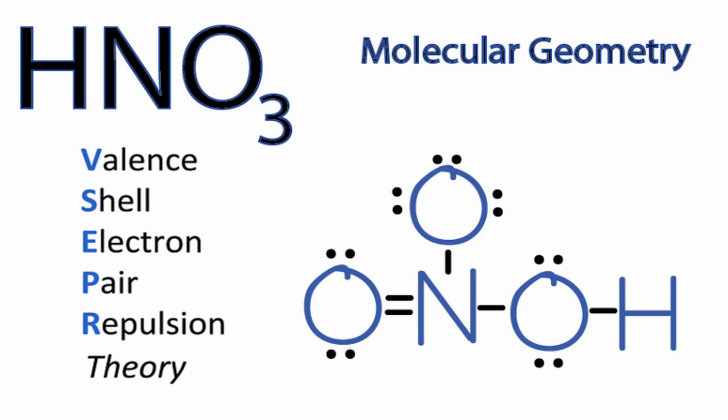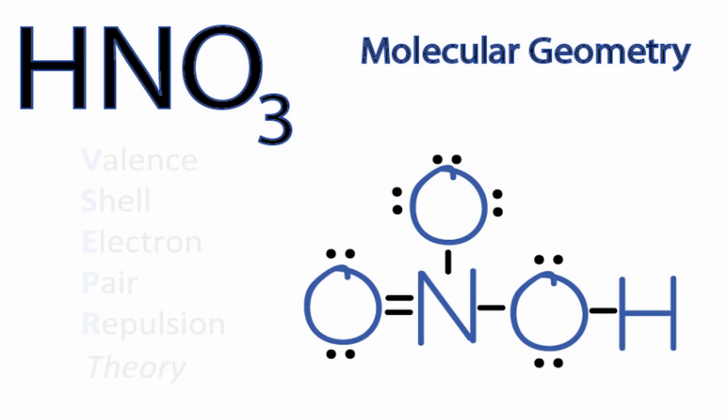And we can see that there are three things bonded to that central nitrogen. So it would make sense that they would spread out in something like a trigonal planar molecular geometry. But let's use the AXN notation just to make sure.